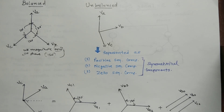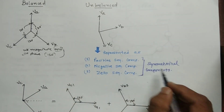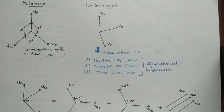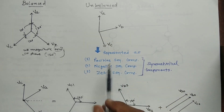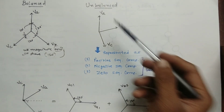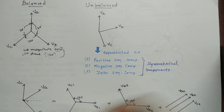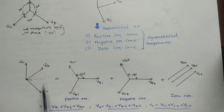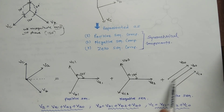This unbalanced system is represented by symmetrical components. Symmetrical components are needed to represent an unbalanced system as a balanced system. There are three symmetrical components: positive sequence component, negative sequence component, and zero sequence component. The unbalanced system is represented as three sequence components. The original unbalanced phasors VA, VB, and VC are represented as three symmetrical sequence components — positive, negative, and zero sequence.